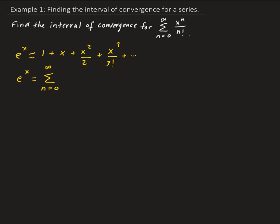Starting from 0 to infinity, e to the x can be written as the sum of x to the n over n factorial. So this series represents e to the x. The question is: for which x values will this series converge?